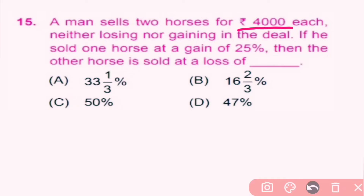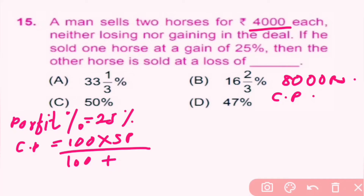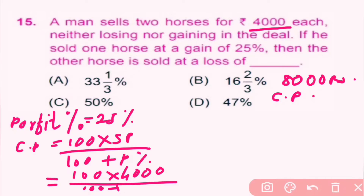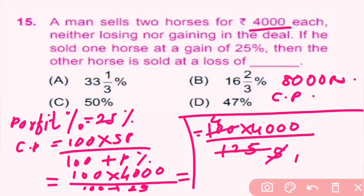The man sells one horse for 4,000, so for two horses that is 8,000 rupees. He sold one horse at a gain of 25%. We first find the cost price of that horse: cost price equals 100 into sale price divided by (100 plus profit percent), which is 100 into 4,000 divided by 125, giving 3,200. So cost price of one horse is Rs 3,200 and it was sold for Rs 4,000.